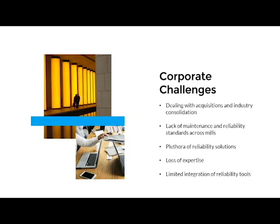Looking at corporate challenges — you see this all the time. We're constantly seeing acquisitions, with this company buying that mill or this company. What that results in, from a maintenance and reliability standpoint, is a lack of maintenance and reliability standards across mills — every mill doing its own thing. You end up with a plethora of reliability solutions. And something we saw, not unique to the paper industry, is we were losing domain expertise — a lot of our expertise was retiring and we had a gap in hiring. APM and tools like this allow you to gather that domain knowledge and put it into software so that it's retained as we start to lose our experts.